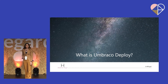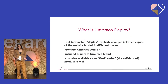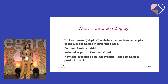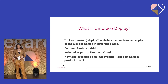What is Umbraco Deploy? Umbraco Deploy is a tool that allows you to transfer a single website between your different hosting environments. A lot of times you're going to have multiple environments: your live environment, a staging environment, a deployment environment for developers, and you want to keep those synchronized at the right times. It's a premium Umbraco add-on included in any Umbraco Cloud subscription automatically, and now it's also available as a standalone on-premise product.